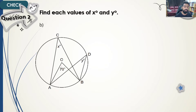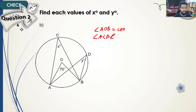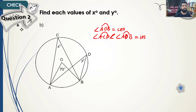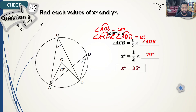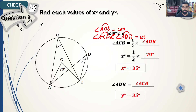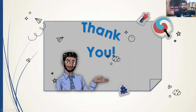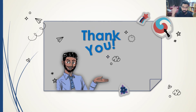For question 4, angle AOB is the central angle and angles ACB and ADB are inscribed angles sharing the same arc. Since the central angle is 70 degrees, the inscribed angle is half of 70 degrees, which equals 35 degrees. Since both inscribed angles are equal, both ACB and ADB measure 35 degrees. I hope you enjoyed this video — don't forget to like and I'll see you next time!